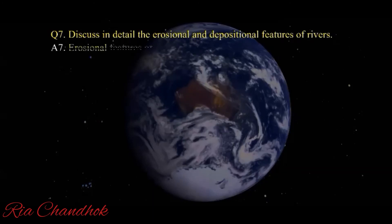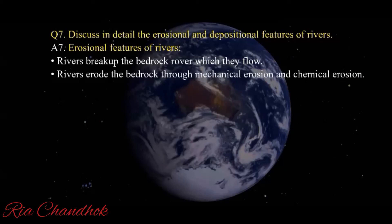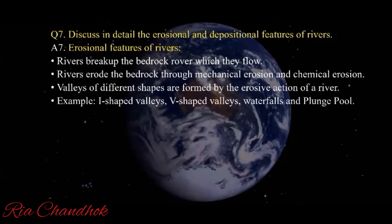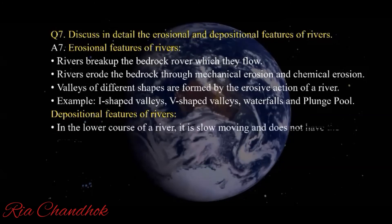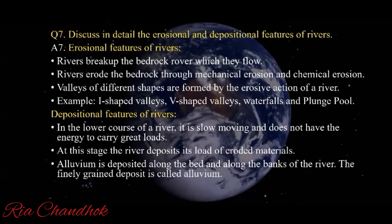Next: discuss the erosional and depositional features of rivers. Rivers break up the bedrock over which they flow through mechanical and chemical erosion. Valleys of different shapes are formed by this erosive activity. Examples of erosional features are V-shaped valleys, I-shaped valleys, waterfalls, and plunge pools. In the lower course, the river is slow-moving and deposits its load of eroded material. Alluvium is deposited along the bed and banks of the river. Examples of depositional features are meanders, oxbow lakes, floodplains, and deltas.